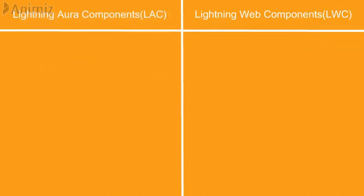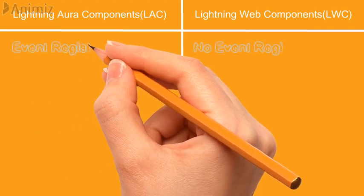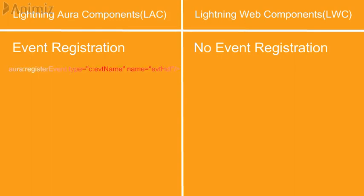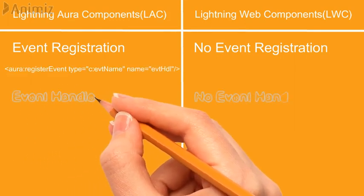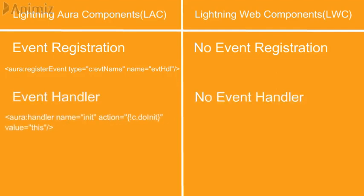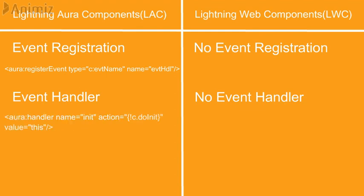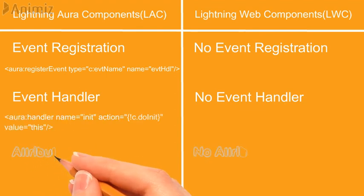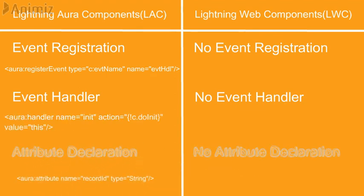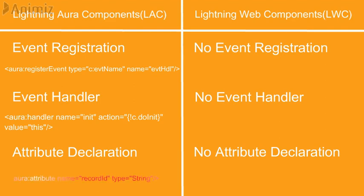Lightning Web Components are lighter than Lightning Aura Components. Here are the three main differences between the two. First, LWCs don't need to have events registered like in Aura Components. Second difference is event handlers — in Aura Components events are handled in the component file of the bundle, but in Web Components it is not required. Third difference is attribute declaration: in Aura Components attributes are declared in the component file, but in Web Components attributes are declared in the JavaScript file.